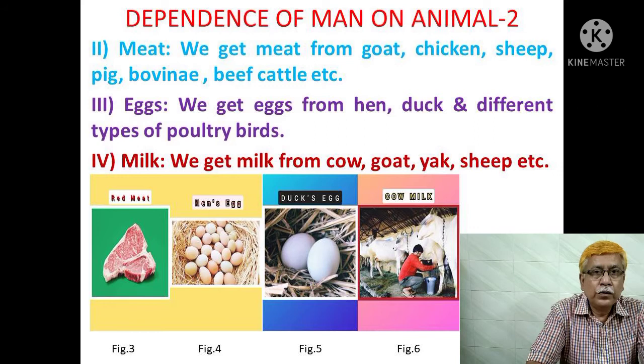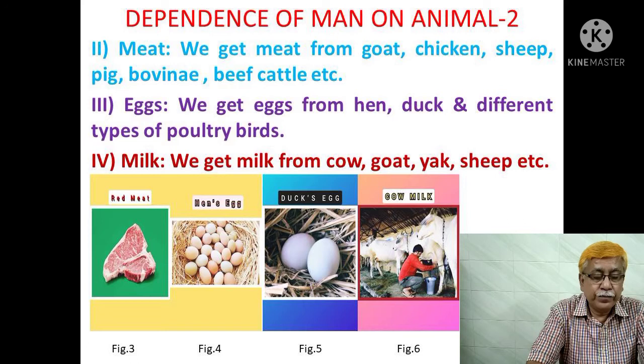Two, meat. We get meat from goat, chicken, sheep, pig, bovine, beef cattle, etc. Three, eggs. We get eggs from hen, duck, and different types of poultry birds.